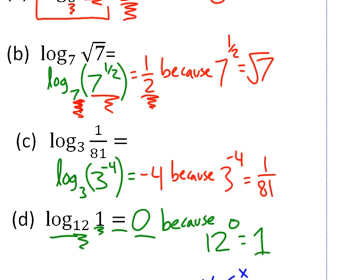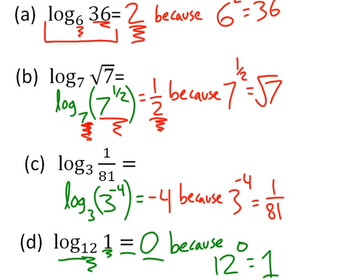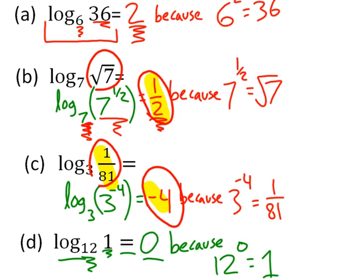So let me contrast example B and C there. Notice that the answer or the logarithm when we evaluated it in B was a fraction. So notice we evaluated a radical, radical 7, and we got a fraction. But notice when you take the logarithm of a fraction you get a negative number. So a lot of times that seems to throw students off. I see students taking logarithms of fractions and they give a fraction in return. Not the case. So the logarithm of a radical will frequently give us a fraction, but the logarithm of a fraction gives us a negative number.